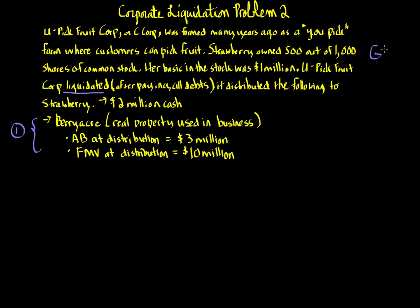We're applying the general rule — section 331 and 336 — for all three variations. The analysis about the special subsidiary rule, the non-recognition rule under section 332 and 337 not applying, carries through all three variations. So in each variation, we go right to the analysis of Strawberry's tax consequences and U-Pick Fruit Corporation's tax consequences under the complete liquidation general rule.